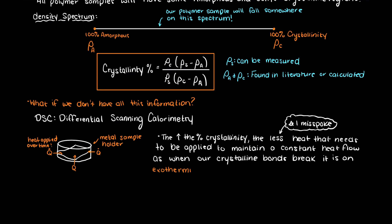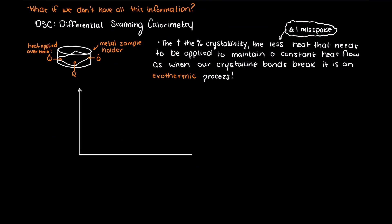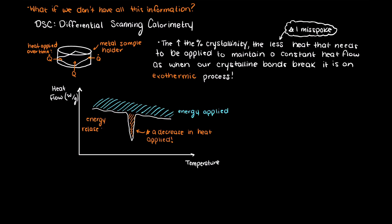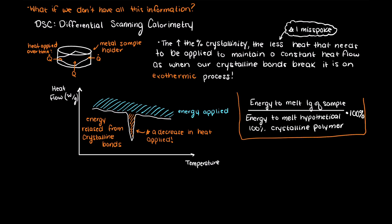So we apply heat at a constant rate and get a graph that looks something like this. This blue area is all the heat that is being applied, and in this area where we see an increase in the heat applied, this is because we need more energy to break the crystalline regions up. So we take the amount of energy needed to melt say 1g of our polymer sample, first 1g of a hypothetical 100% crystalline version of our polymer, then we multiply that by 100% and we get our sample's crystallinity.